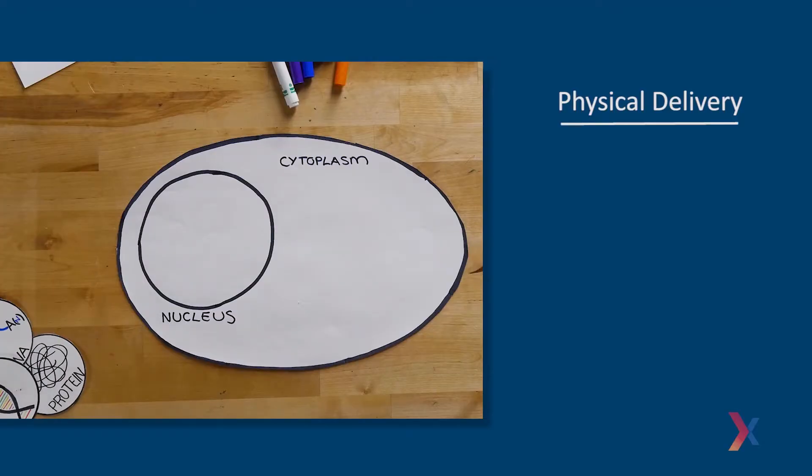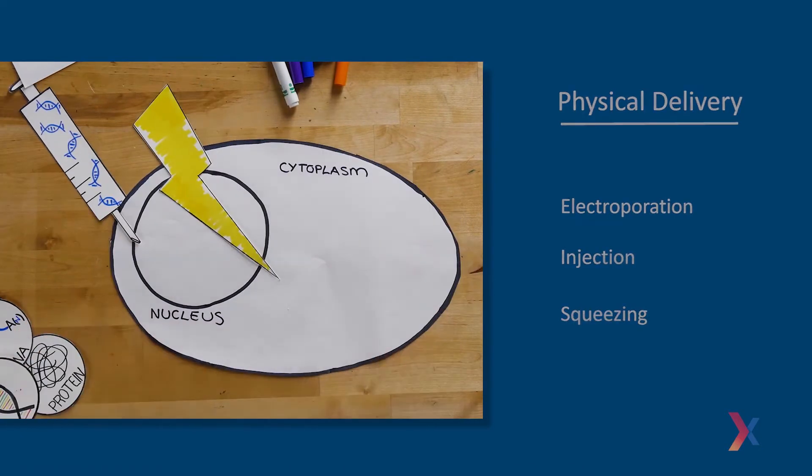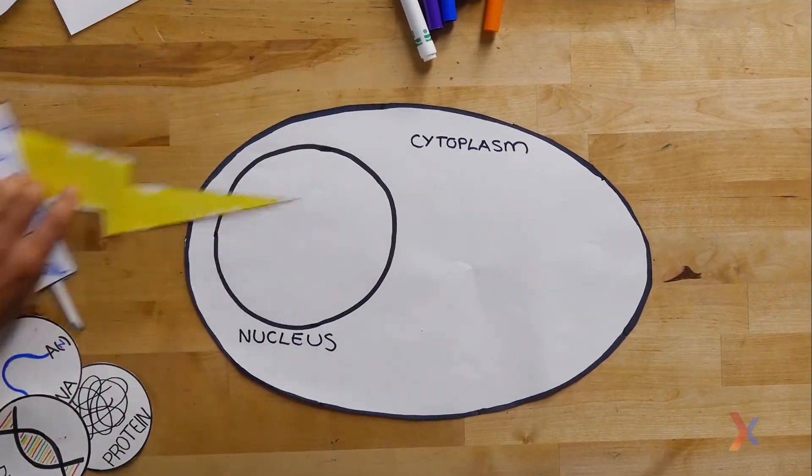Physical delivery relies on a temporary destabilization of the cell membrane to enable DNA, RNA, or protein to enter. Methods of physical delivery are amazingly diverse. Scientists can electrocute cells, inject cells, or even squeeze cells. The most commonly used method is electroporation.